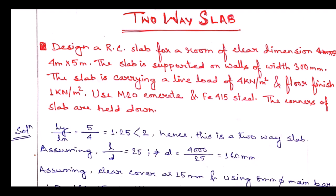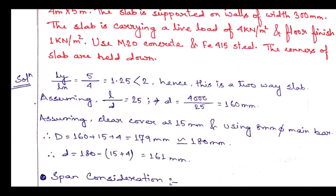Assuming L/d = 25, effective depth d = 4000/25 = 160 mm. Assuming clear cover 15 mm and 8 mm diameter main bars, overall depth D = 160 + 15 + 4 = 179 mm, rounded to 180 mm. Revised effective depth = 180 − 15 − 4 = 161 mm.